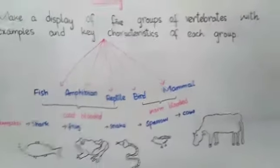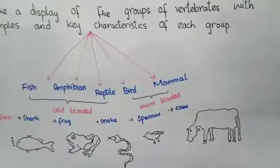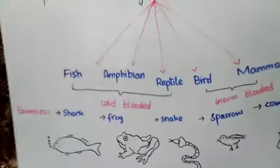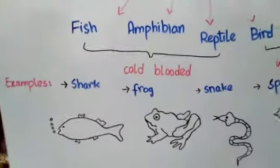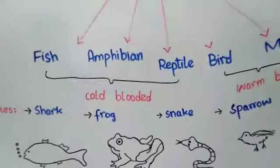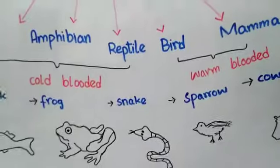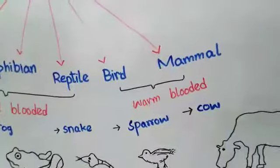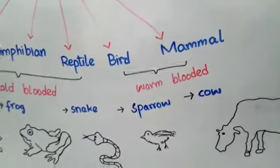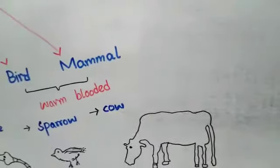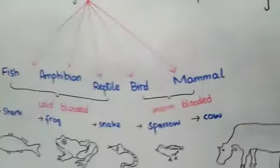The last key characteristic is reproduction — how they produce their young. Fishes lay eggs in water. Amphibians also lay eggs in water. Reptiles lay eggs on land. Birds also lay eggs on land, but their eggs have a very hard shell that protects them. Mammals, however, give birth to live babies. So this is the difference in how each group reproduces.